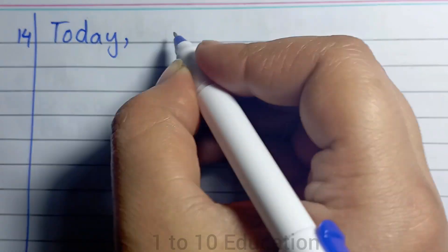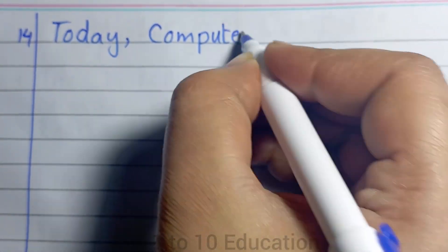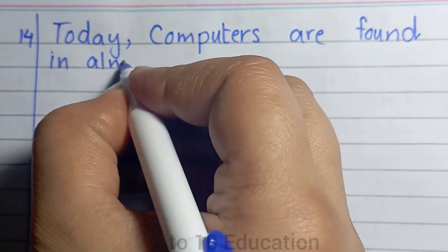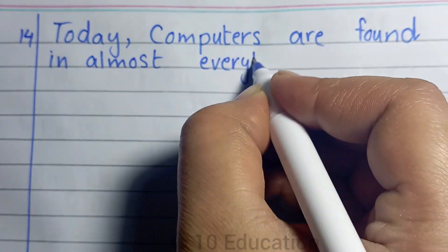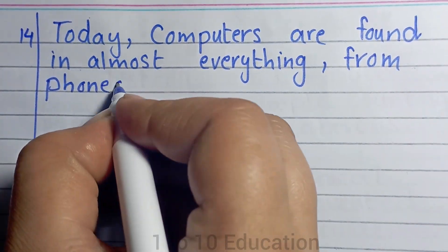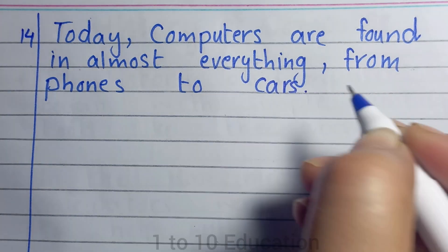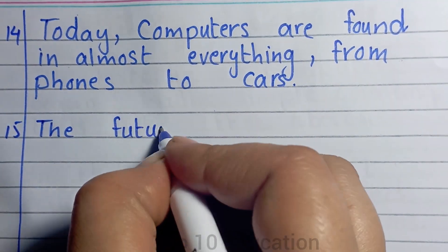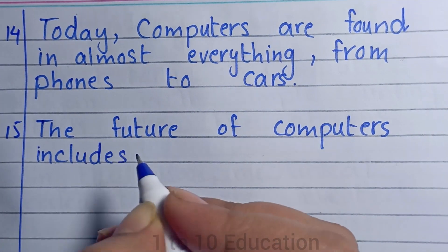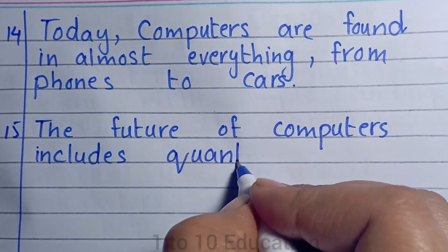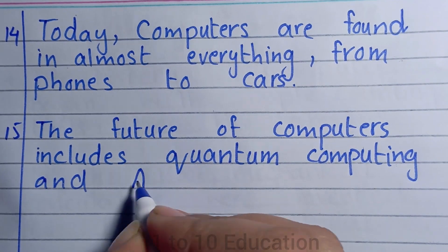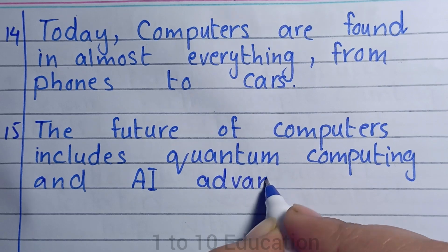Number 14: Today, computers are found in almost everything, from phones to cars. Number 15: The future of computers includes quantum computing and AI advancements.